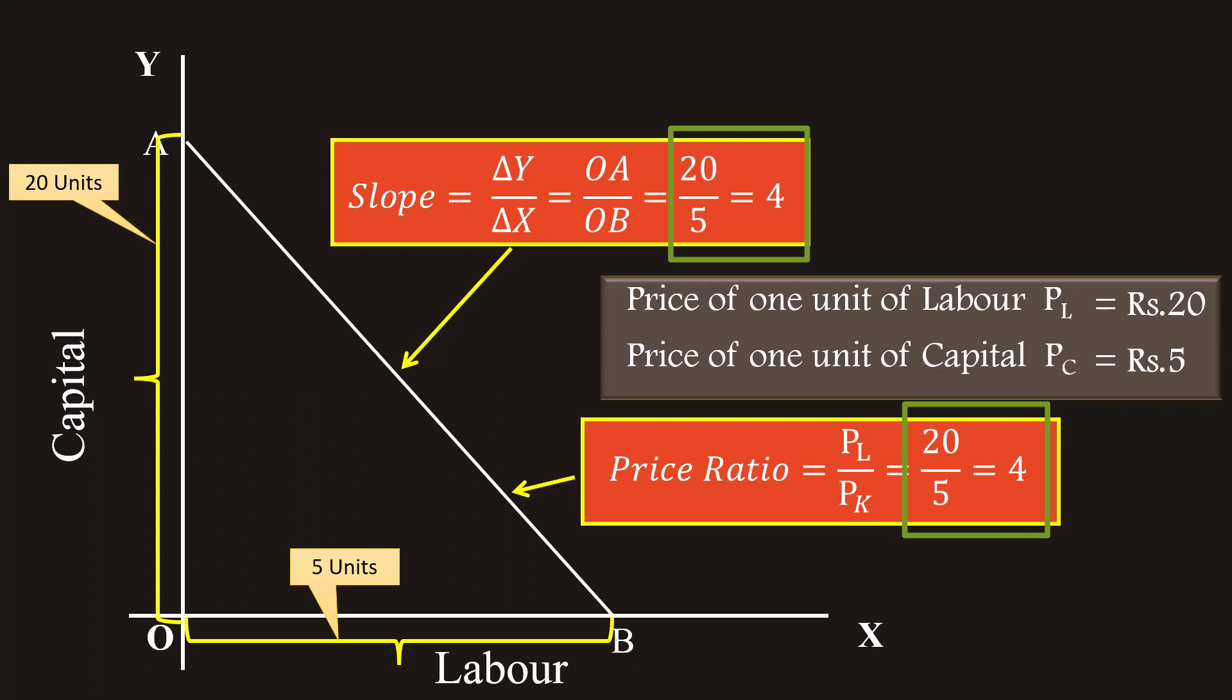It is the same as the slope of the isocost line. Slope and price ratio are very important in determining the producer equilibrium or in determining the optimum combination of factors. Our discussion ends here. We shall meet in the next lesson.